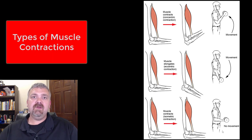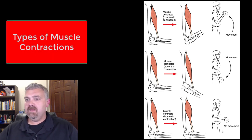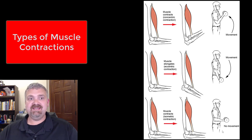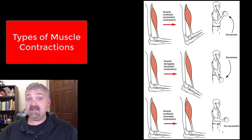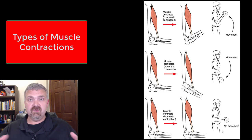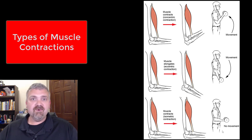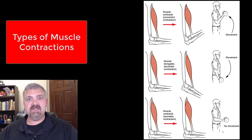Hey everybody, Dr. O here. In this video, we're going to talk about the different types of muscle contractions. We always talk about lifting weights, but we never talk about the fact that lots of muscle contractions lead to no lifting or no movement at all, and also we have to lower the weights that we lifted. So we're going to talk about these different types.